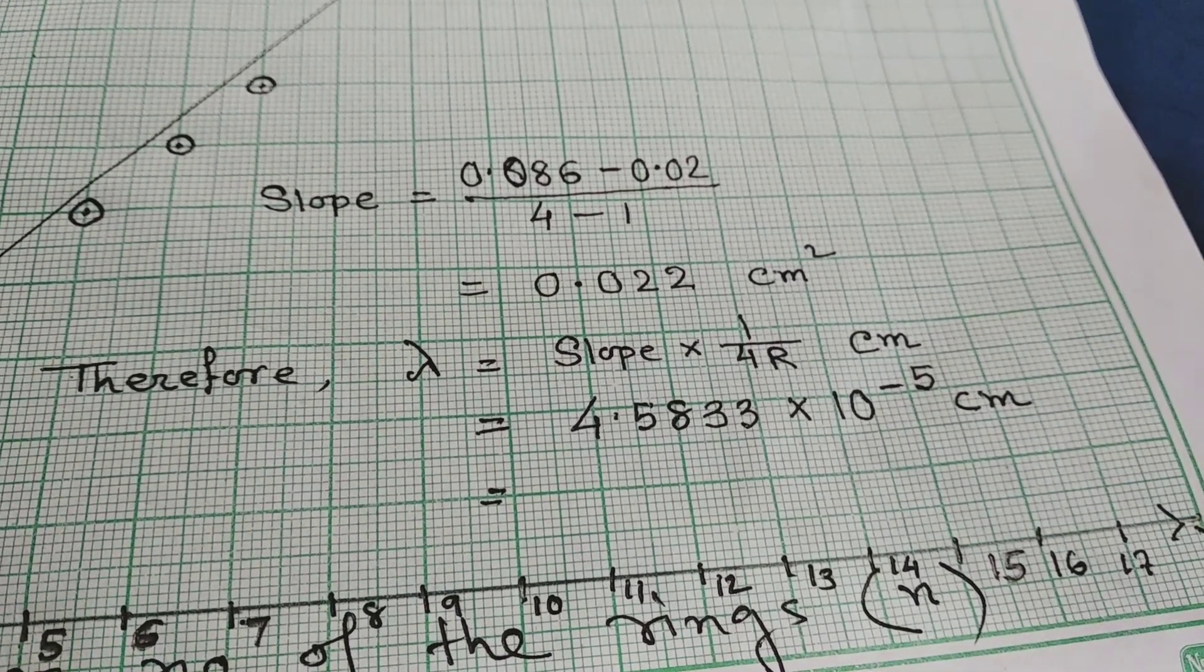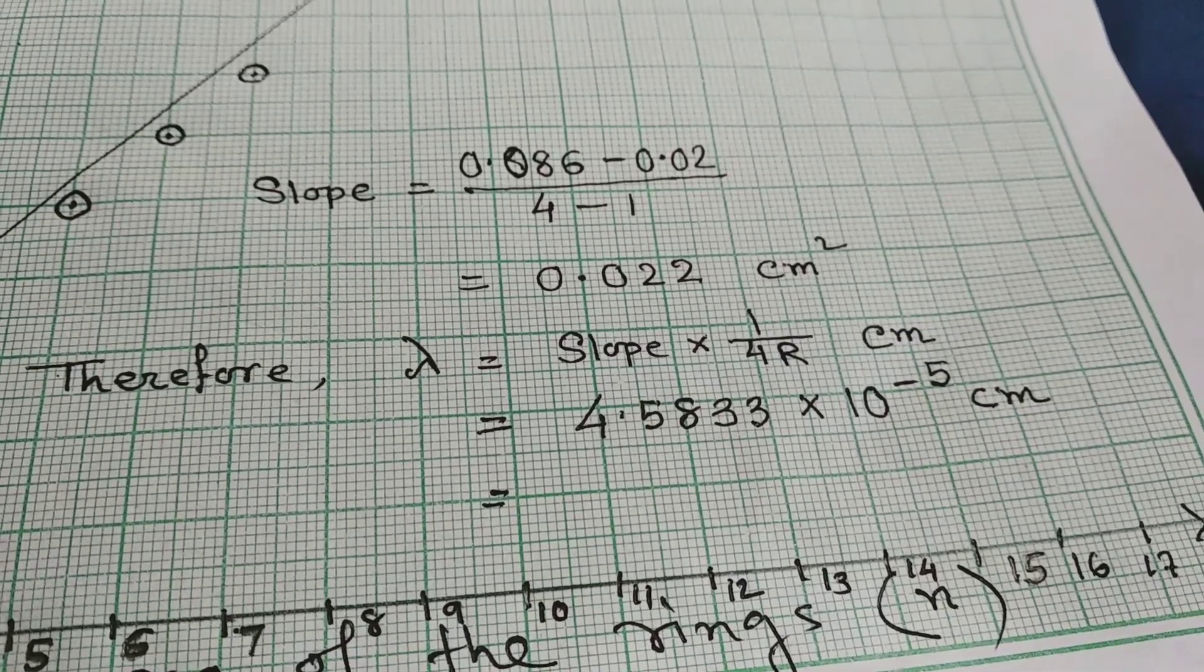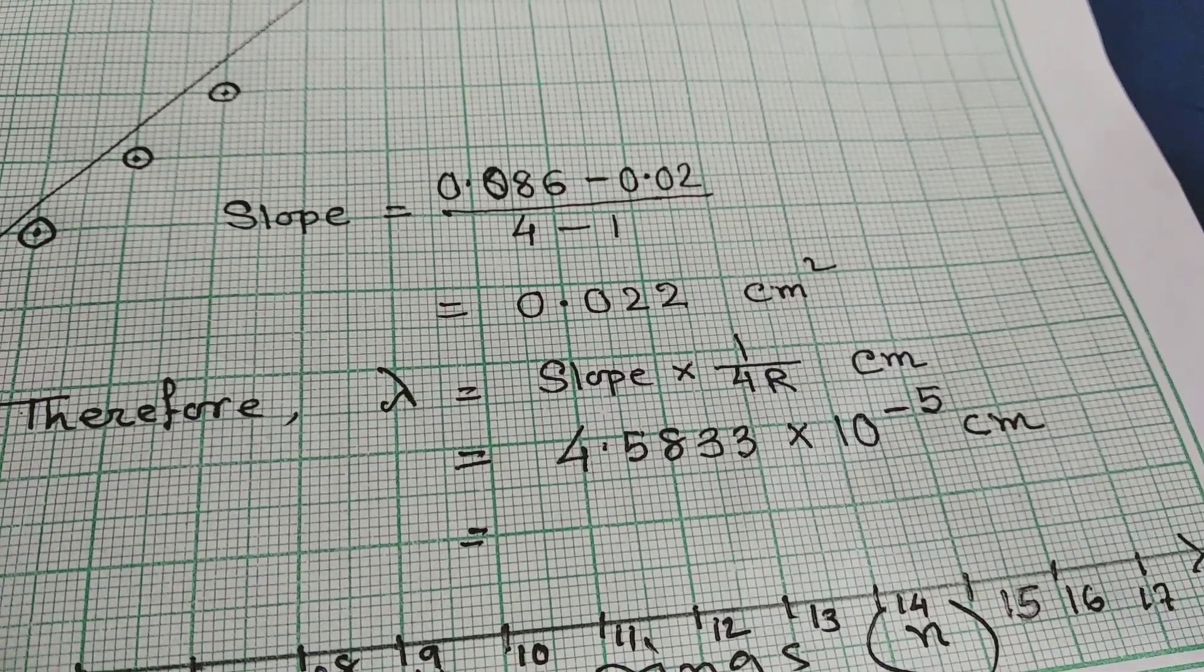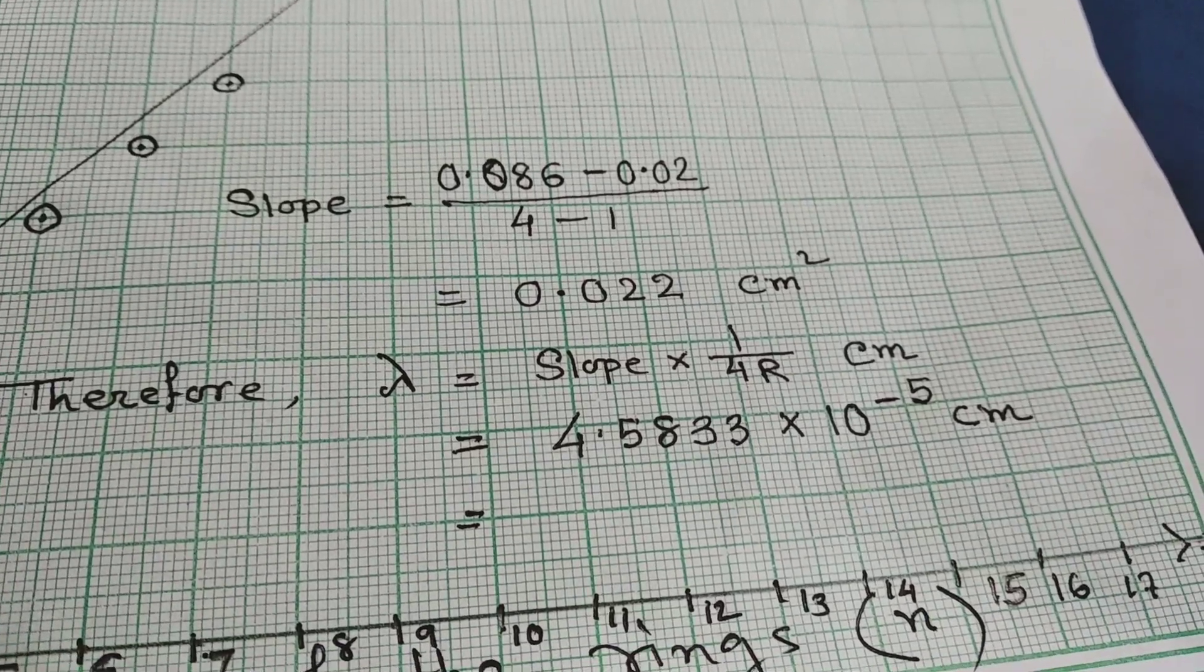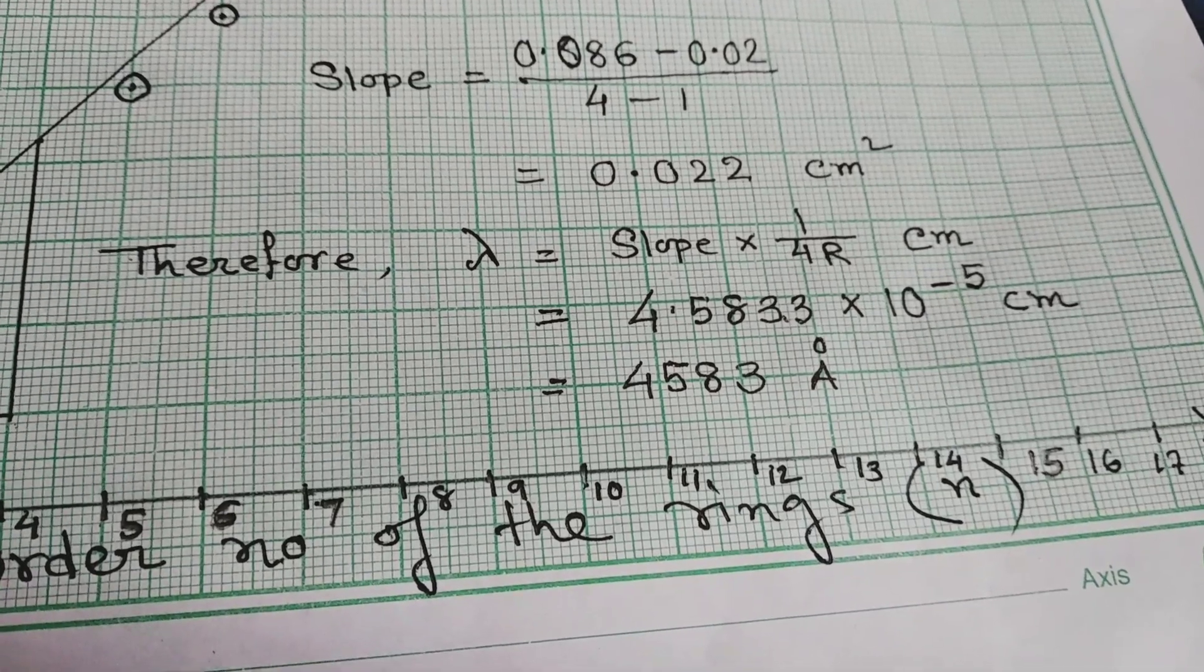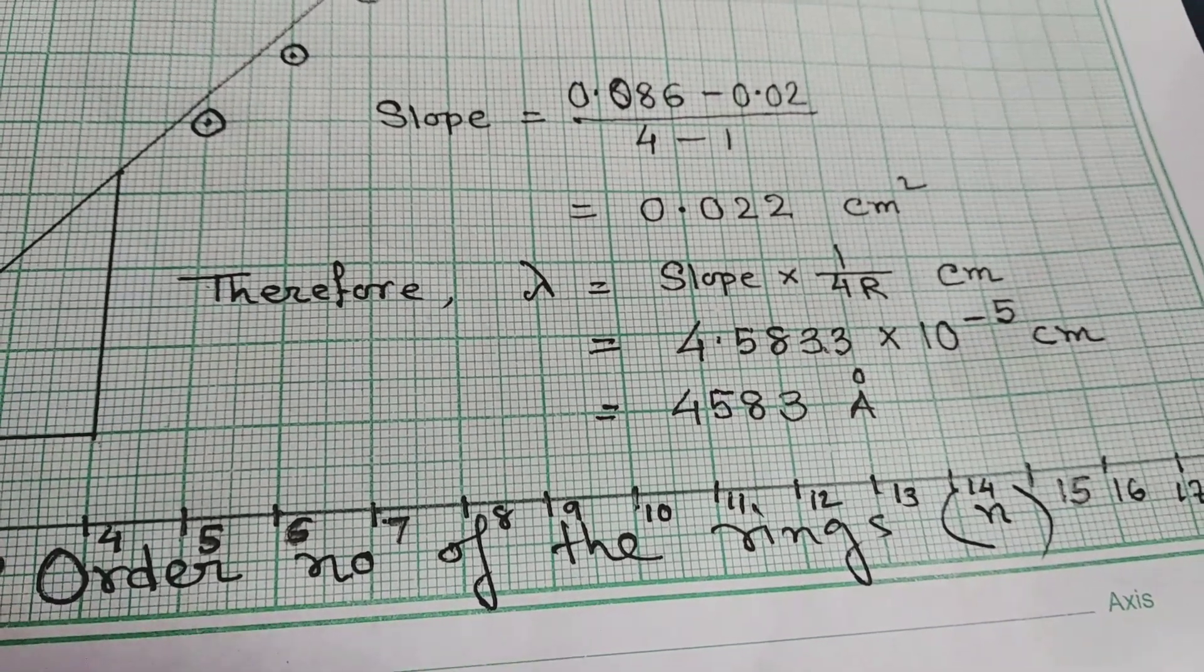We need to convert it into angstrom. So, for conversion, we need to multiply by 10 to the power 8. Our result is 4,583 angstrom.